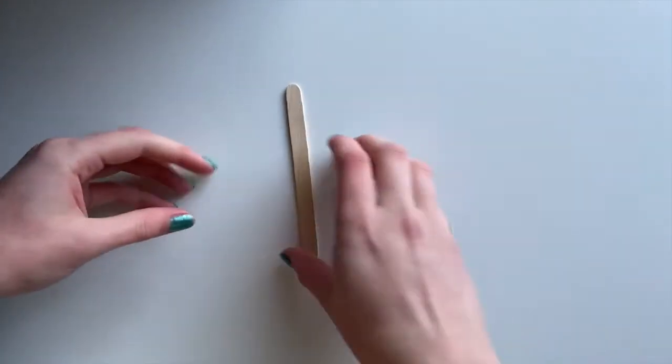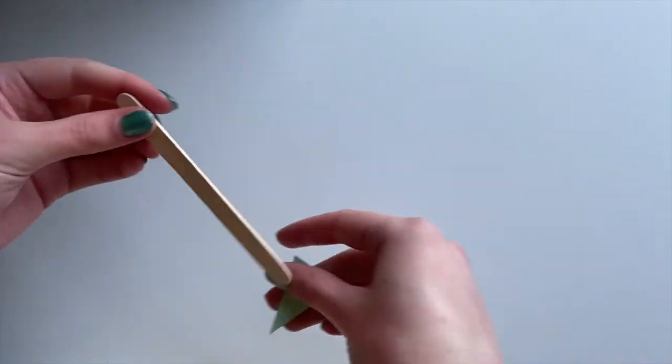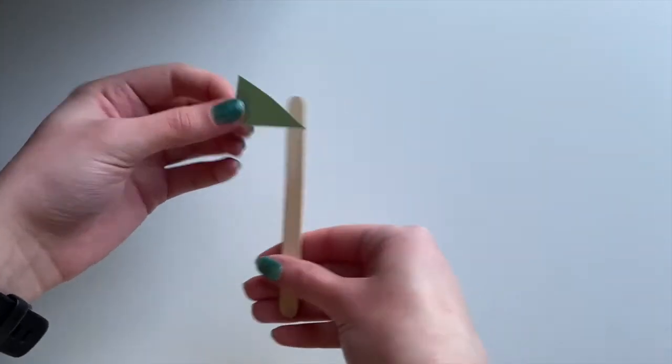For your next step you're going to take your popsicle stick and your triangle and you're going to glue the triangle to the top of the popsicle stick like a sail.